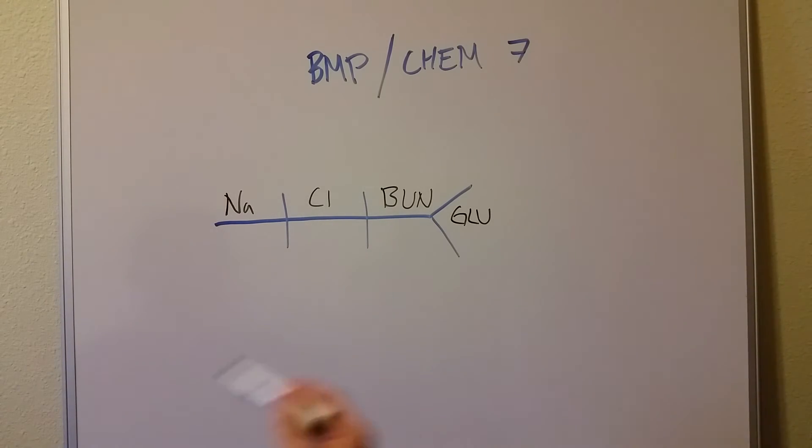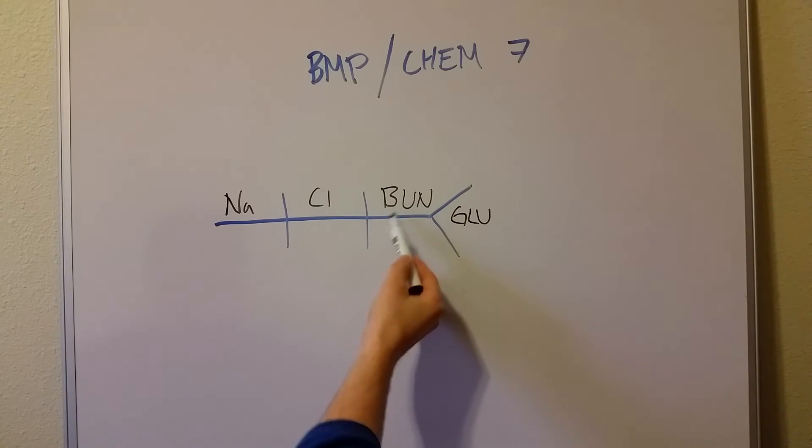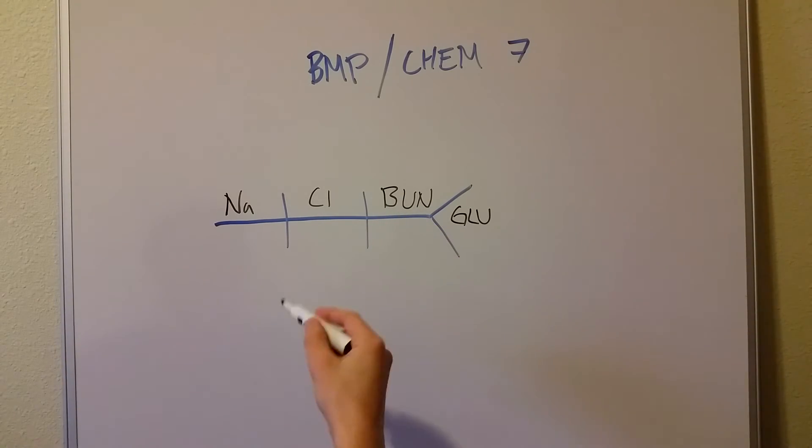Then I think about, typically what do we talk about when we talk about BUN? We talk about it in terms of kidney function and creatinine is another part of that CHEM 7. BUN to creatinine ratio. So that fills in there.